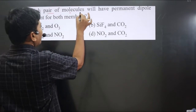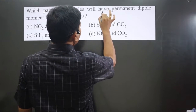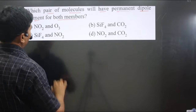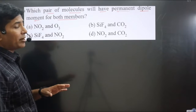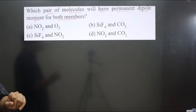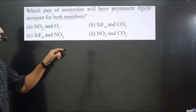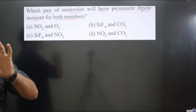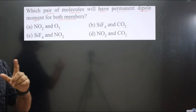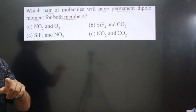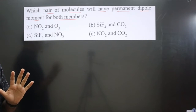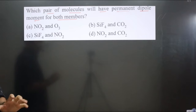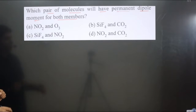The question asks which pair of molecules will have a permanent dipole moment for both members. The options show pairs of molecules, and the question is which pair is polar by nature. Polar molecules are those in which the dipole moment is non-zero.